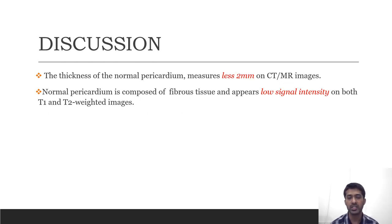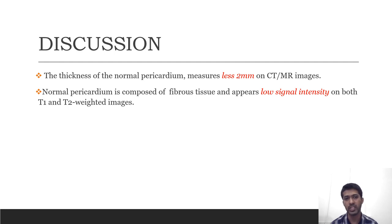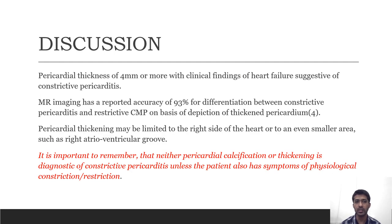Normally, pericardial thickness is less than 2 mm on CT and MRI. The pericardium consists of fibrous tissue and therefore appears low signal on both T1 and T2 weighted images. Pericardial thickness of 4 mm or more with clinical findings of heart failure is highly suggestive of constrictive pericarditis.